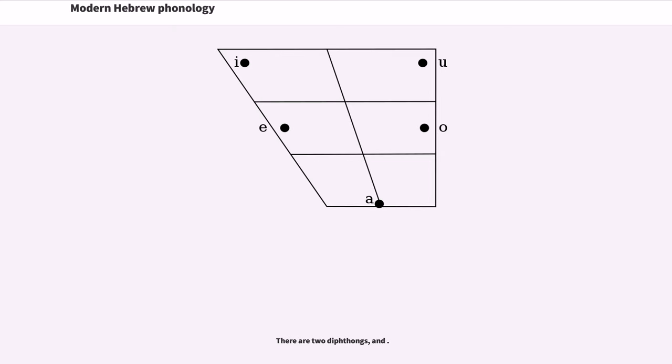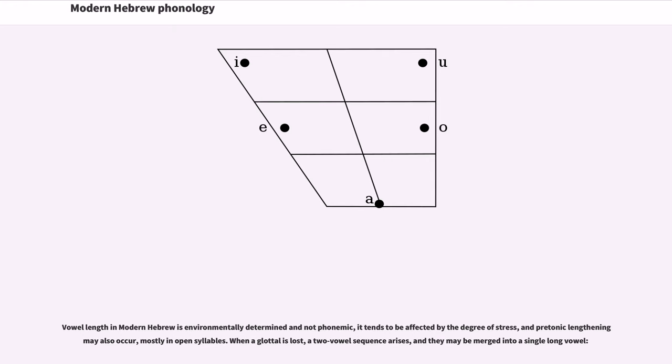There are two diphthongs, ay and oy, in Biblical Hebrew. Each vowel had three forms: short, long, and interrupted. However, there is no audible distinction between the three in modern Hebrew, except that kamatz is often pronounced as o in Ashkenazi Hebrew. Vowel length in modern Hebrew is environmentally determined and not phonemic. It tends to be affected by the degree of stress, and pre-tonic lengthening may also occur, mostly in open syllables.